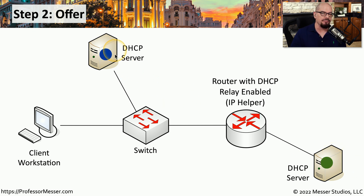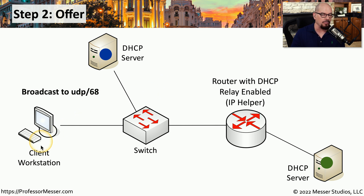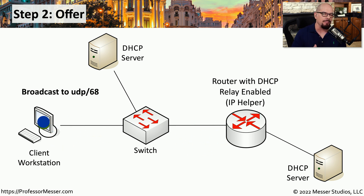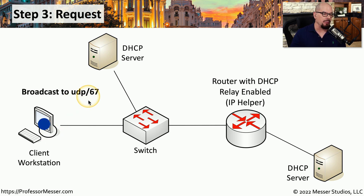Now that both DHCP servers have received our request, we move to step two, the Offer phase. These two devices send their offers back to the original client workstation, often sent to a broadcast address over UDP port 68. The reason we're using so many broadcasts is because our client workstation does not yet have an IP address. The client workstation can then examine both offers and make a decision. It sends another broadcast over UDP port 67 in step three, the Request phase.